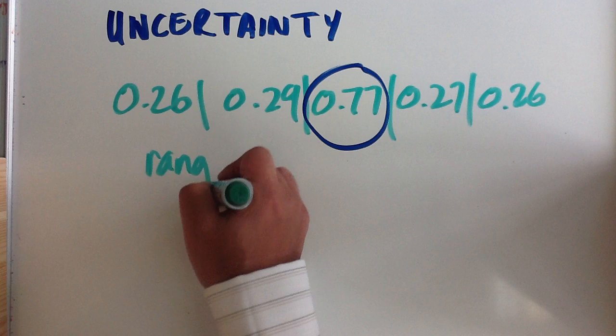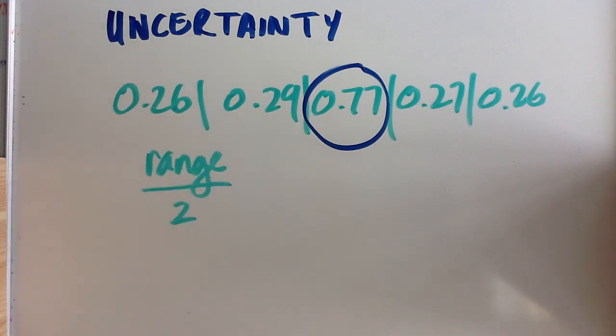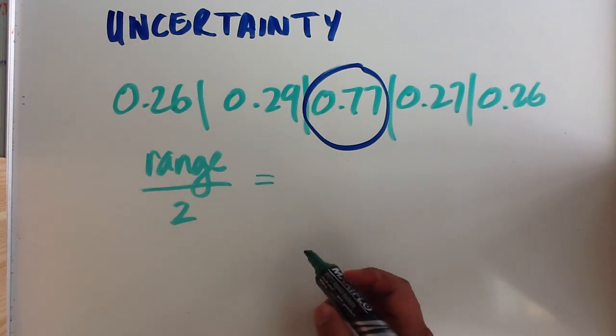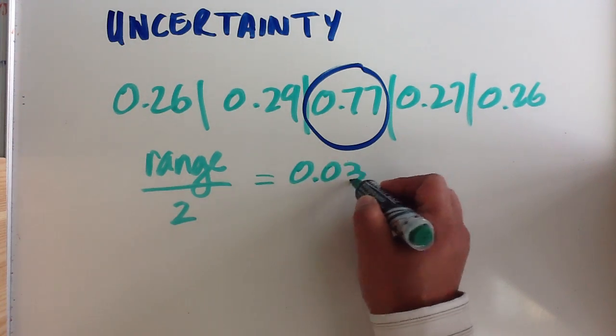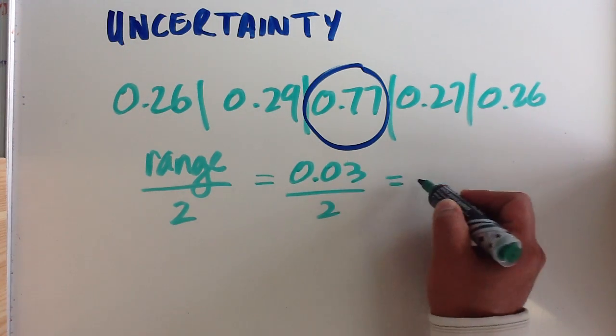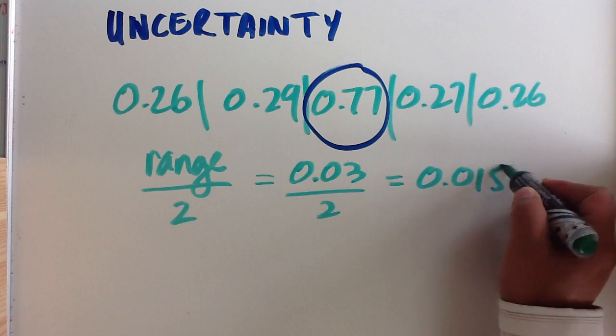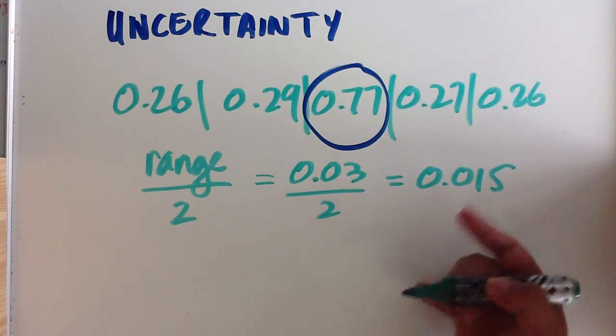So the range divided by 2, or half the range. In this case, the bottom value is 0.26, the top value is 0.29, and so the range is 0.03. Half of that would give 0.015, which is your uncertainty.